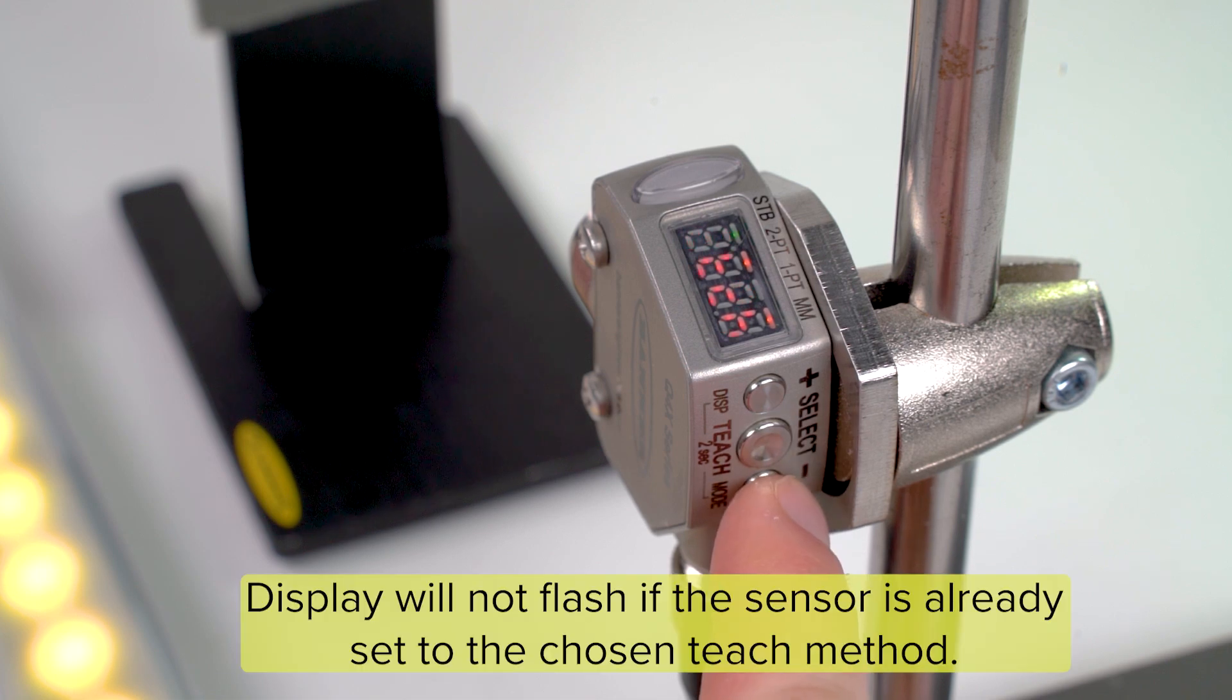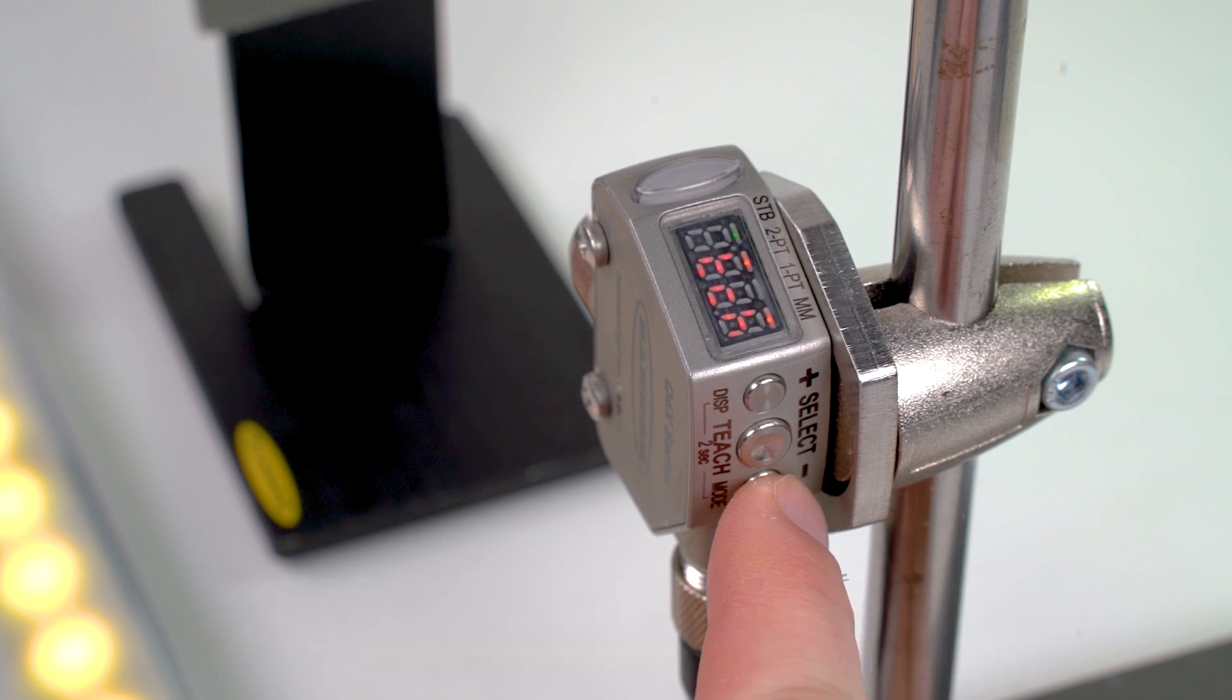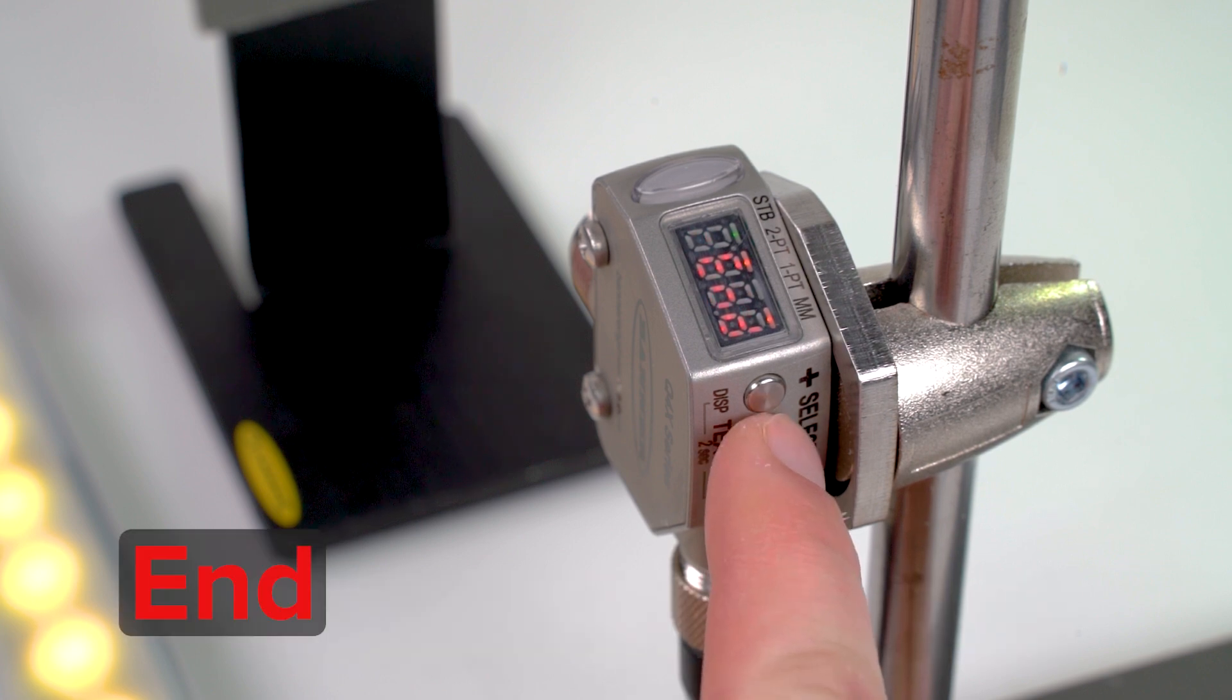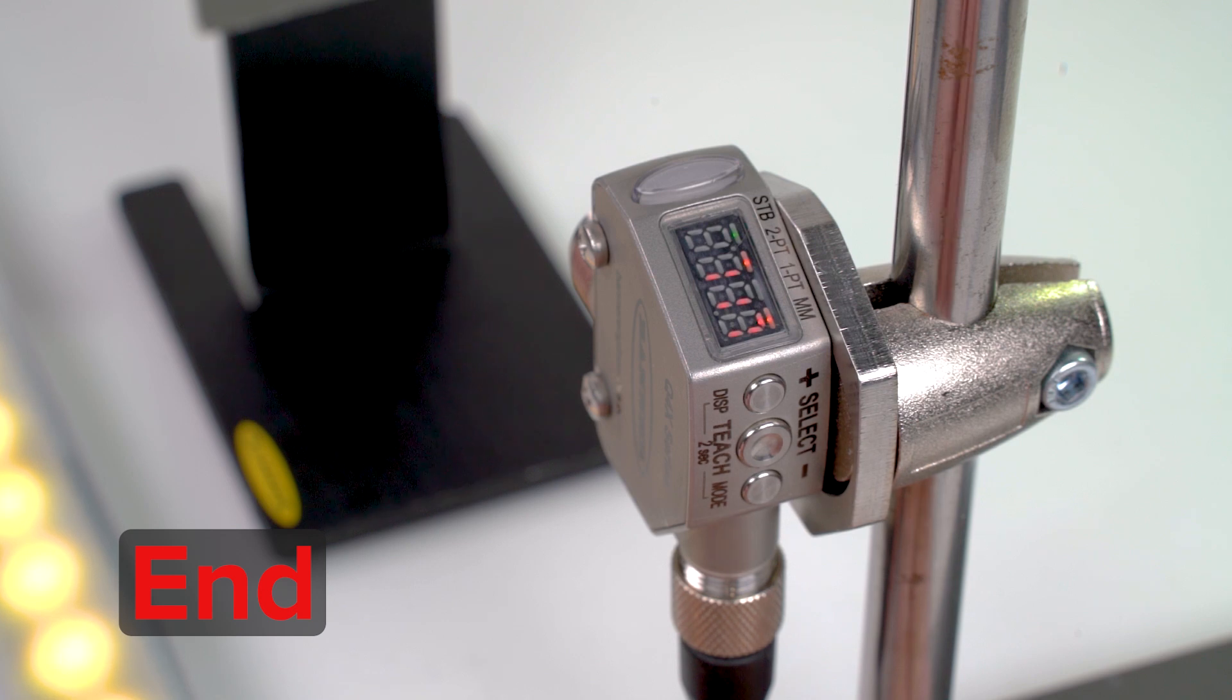The display will flash to confirm your selection and then return you to the main menu. Use the plus and minus buttons again to navigate through the menu until you see end and press the select button again, which will return the sensor to run mode.